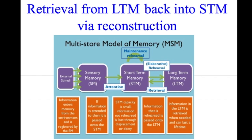A good starting point is to relate this to the multi-store model because that really highlights the limitations of the whole encoding mechanism. So let's say we witness a fight — our sensory memory will very briefly register all of the information that our senses detect, but we can only attend to limited aspects of this, which could be affected by our emotions. We might empathize with the victim, we might be focusing on the perpetrator, etc.